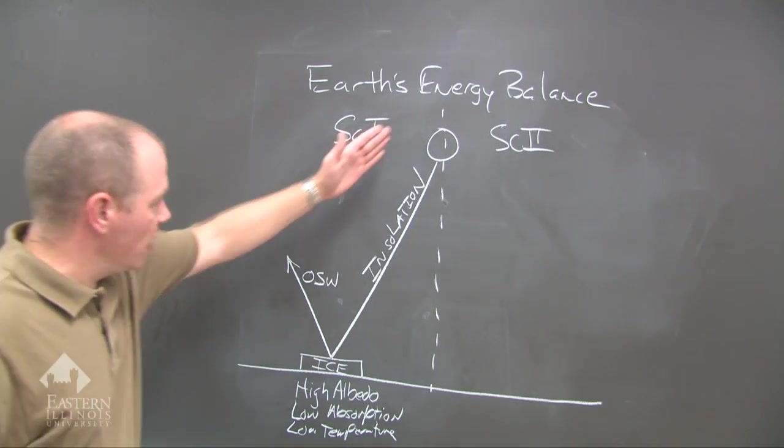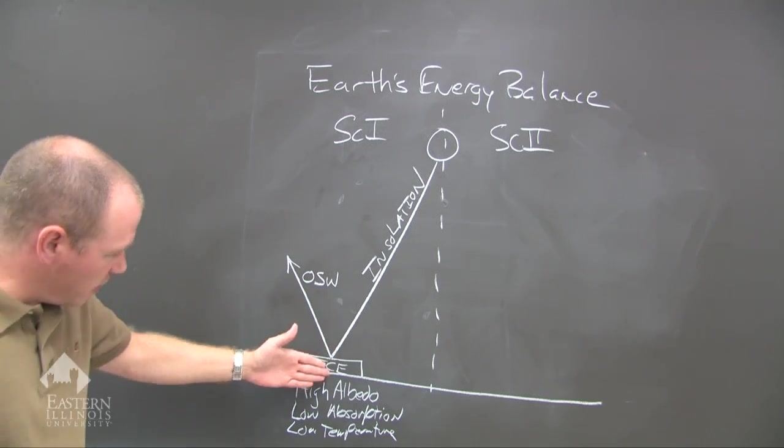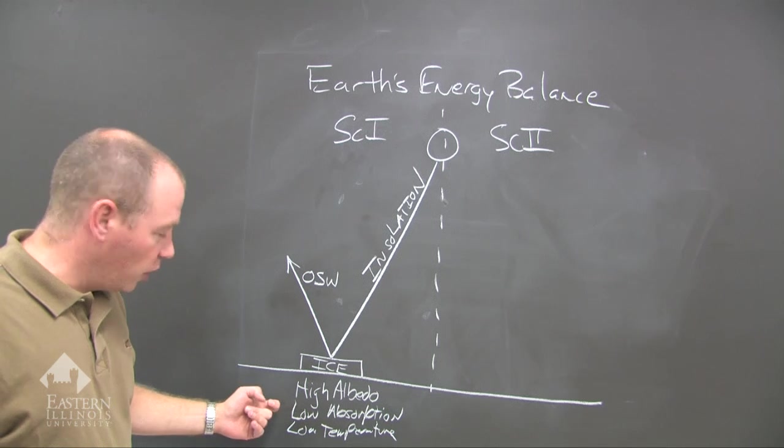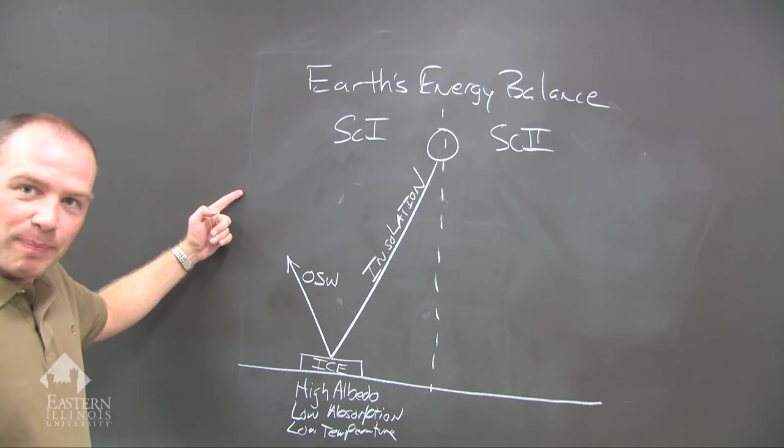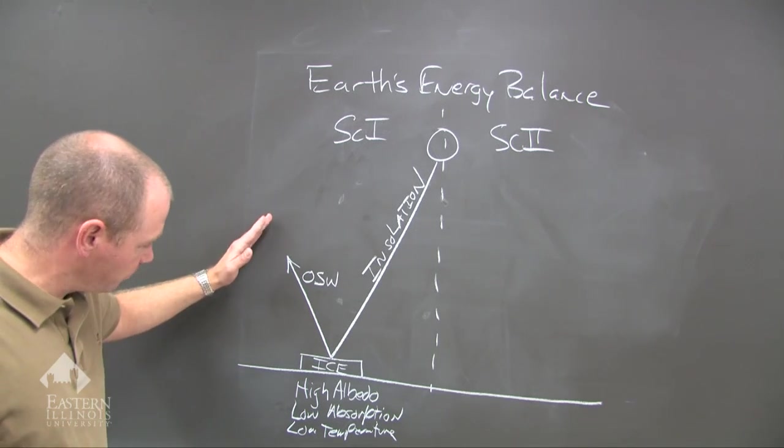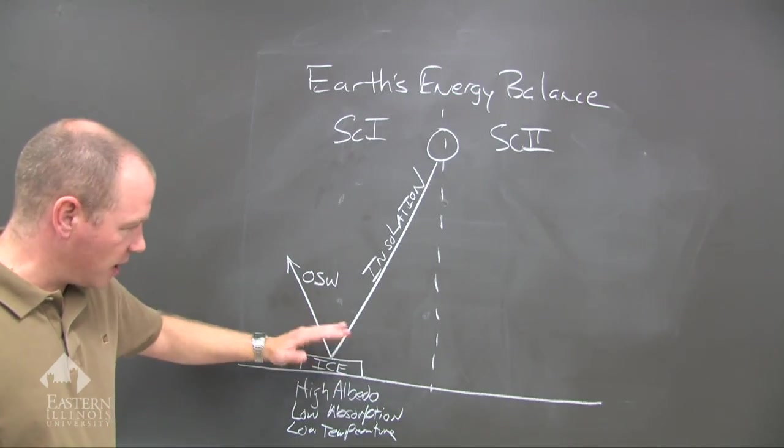So insolation comes in through the atmosphere, hits the surface that has a high albedo, such as ice. Low absorption, because it's high albedo, it reflects that solar radiation back out into the atmosphere or even into space. And then we get a low temperature at the surface. So we keep the temperatures low.